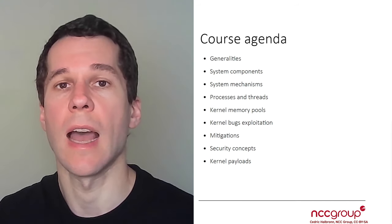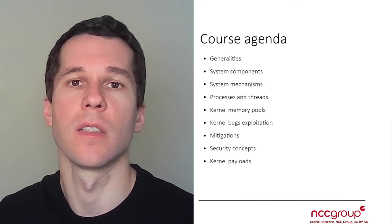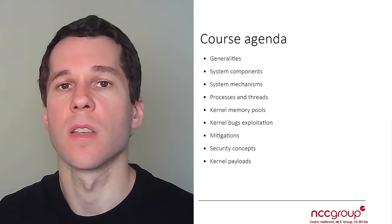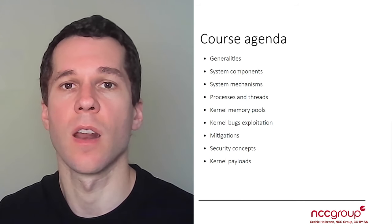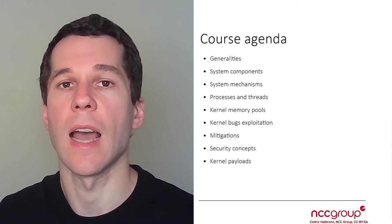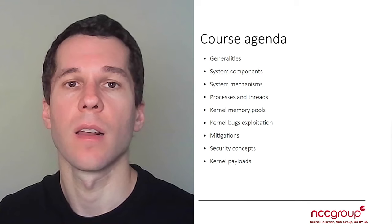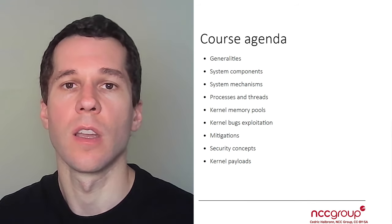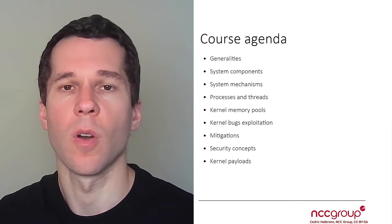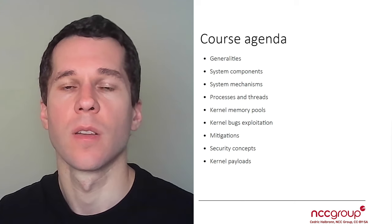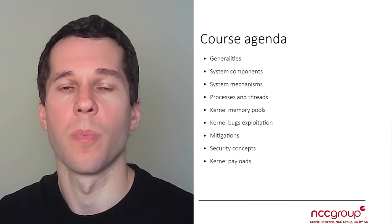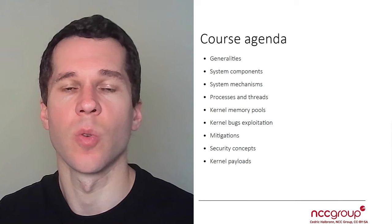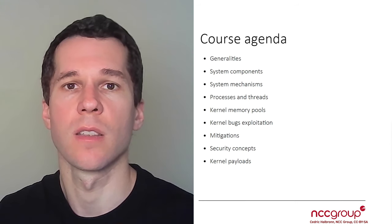Then we are going to look at how access checks are implemented for processes, so these processes can only access what they are supposed to. Then we will look at how kernel exploit payloads are able to execute code in user-land, either by migrating from kernel to user-land, or by doing what we call data-only attacks, which is basically a way to patch things in memory in order to elevate a given process so it executes with system privileges.